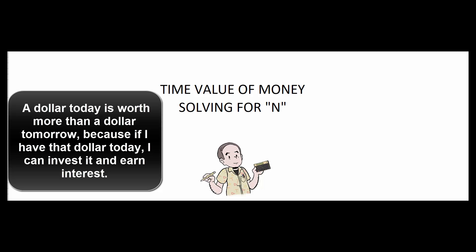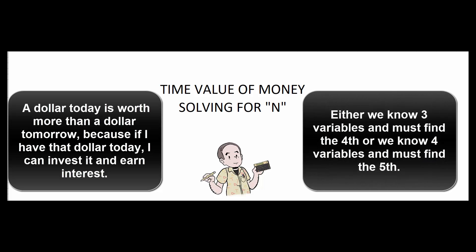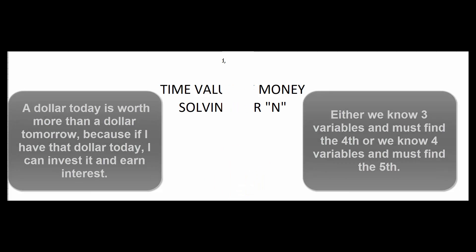What happens in textbooks and in the real world is we're given three variables and have to find the fourth, or sometimes we're given four variables and have to find the fifth. So let's do a little problem that walks us through that process.